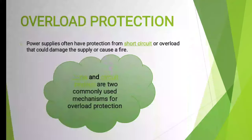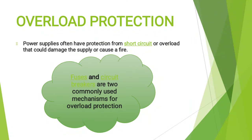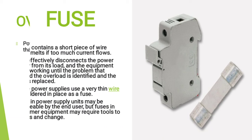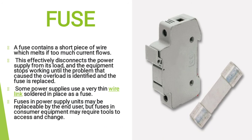Power supplies often have protection from short circuit or overload that could damage the supply or cause a fire. Fuses and circuit breakers are two commonly used mechanisms for overload protection. A fuse contains a short piece of wire which melts if too much current flows through it, effectively disconnecting the power supply from its load; equipment stops working until the problem causing the overload is identified and the fuse is replaced.